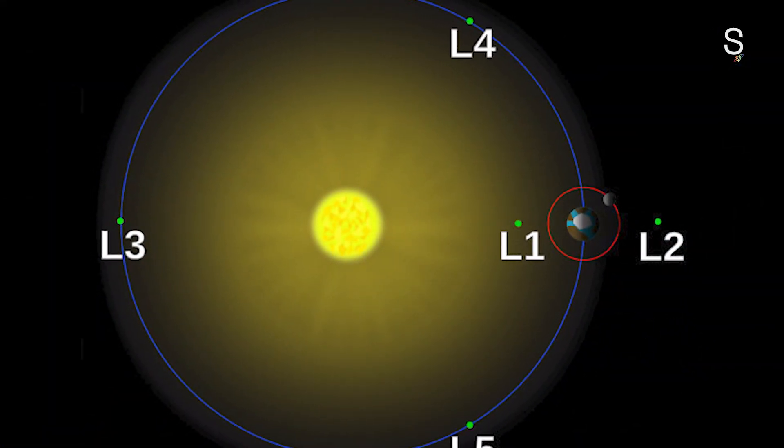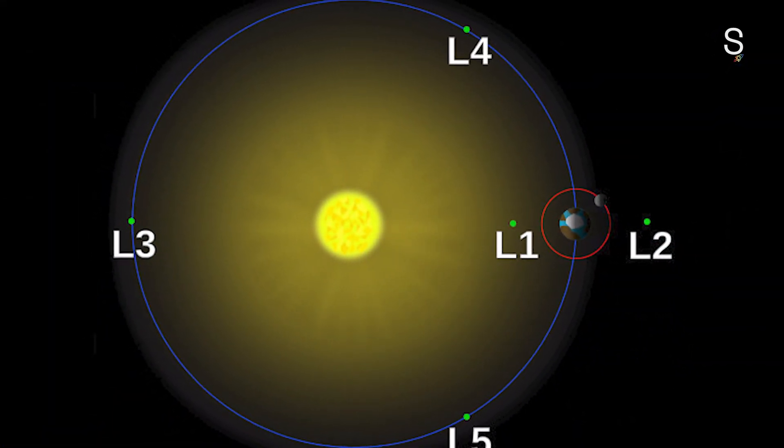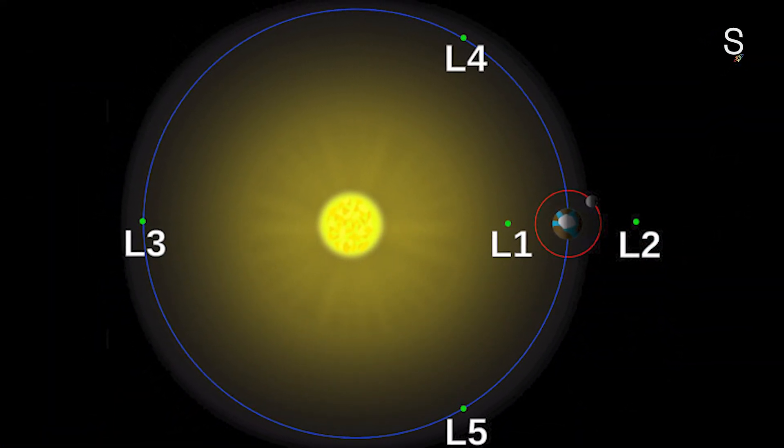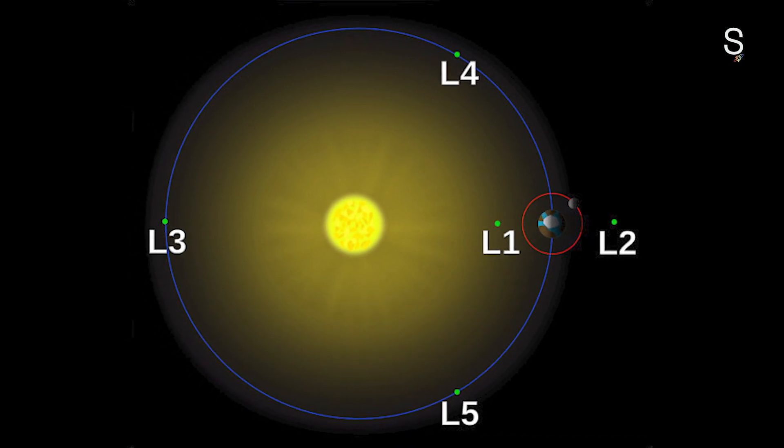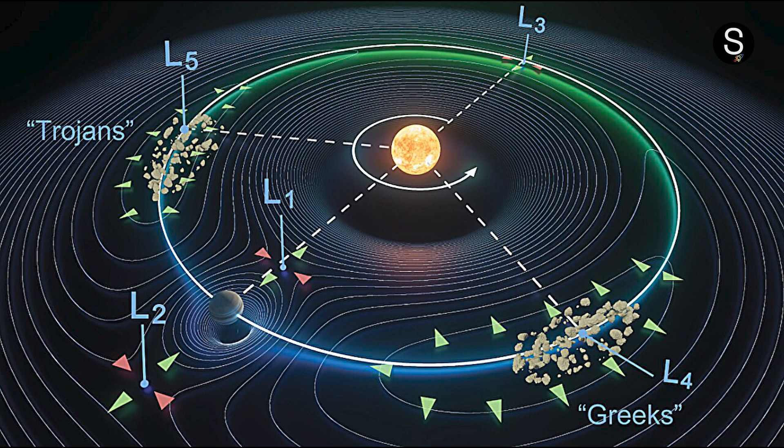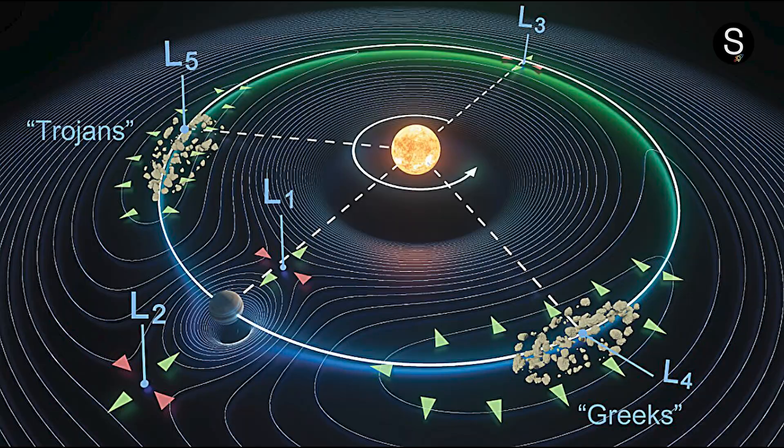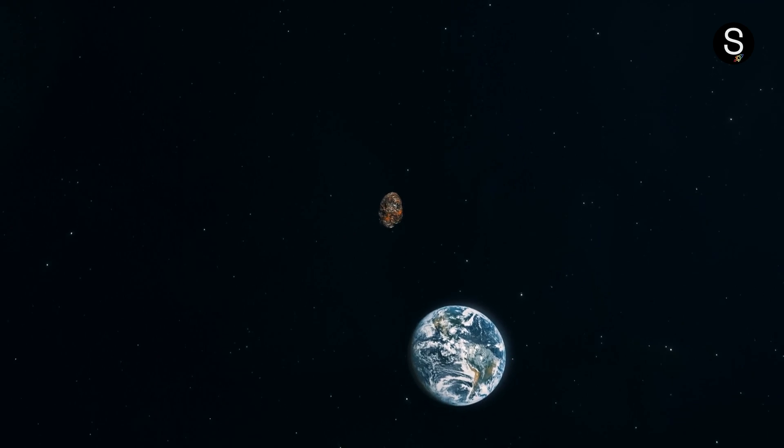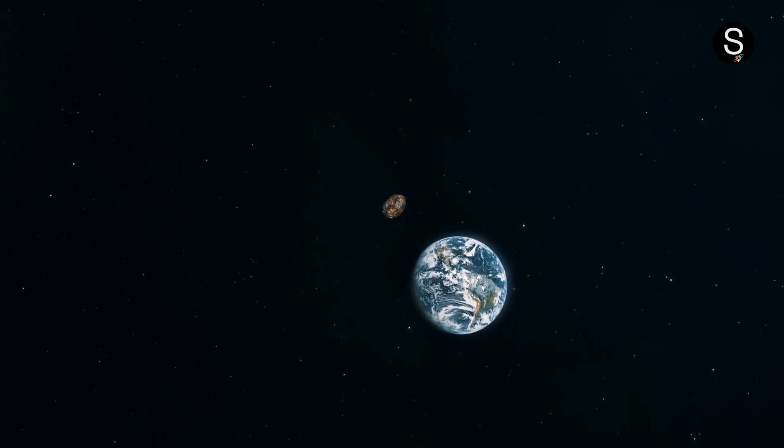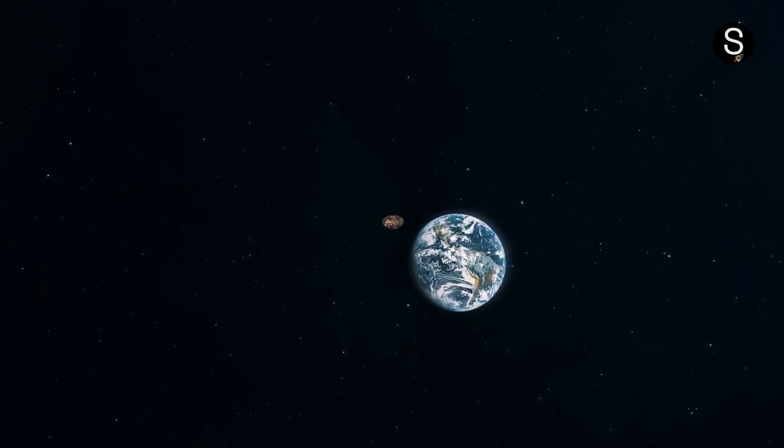Regarding the Earth-Sun Lagrange point 3, what are your thoughts? Located on the opposite side of the orbit of the Earth, would there be a concealed object in that location? In contrast to Lagrange points 4 and 5, which are known to be stable, Lagrange points 1, 2, and 3 are not at all stable. After a period of time, an object that was situated at one of these spots would, once again move away as a result of the gravitational attraction exerted by the other planets.